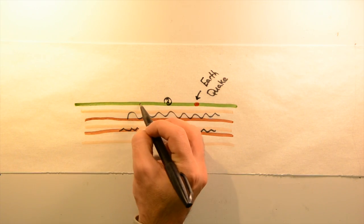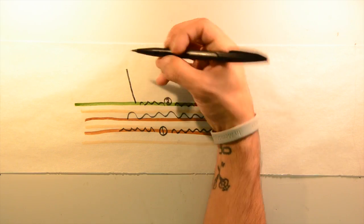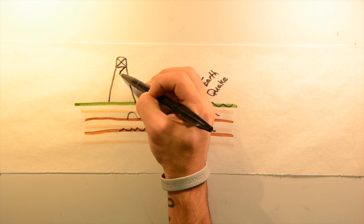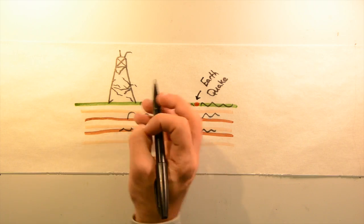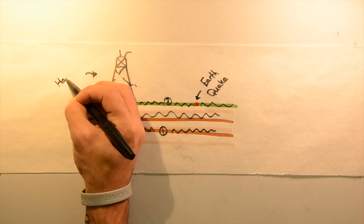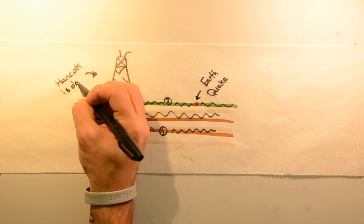Even though surface waves arrive after body waves, they are responsible for most of the damage associated with earthquakes. In deeper earthquakes, though, the damage and strength of these surface waves is reduced significantly.